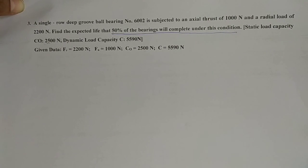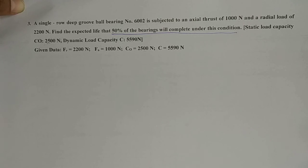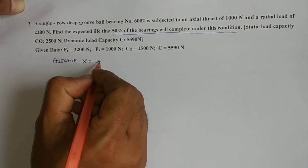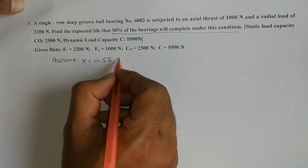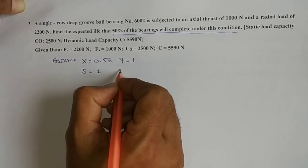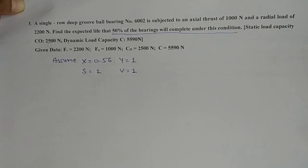Since X, Y, S and V are not given, we assume: X = 0.56, Y = 1, service factor S = 1, and V = 1 (inner race rotating). Now find the equivalent bearing load. P = S × X × V × FR + Y × FA = 1 × 0.56 × 1 × 2200 + 1 × 1000.